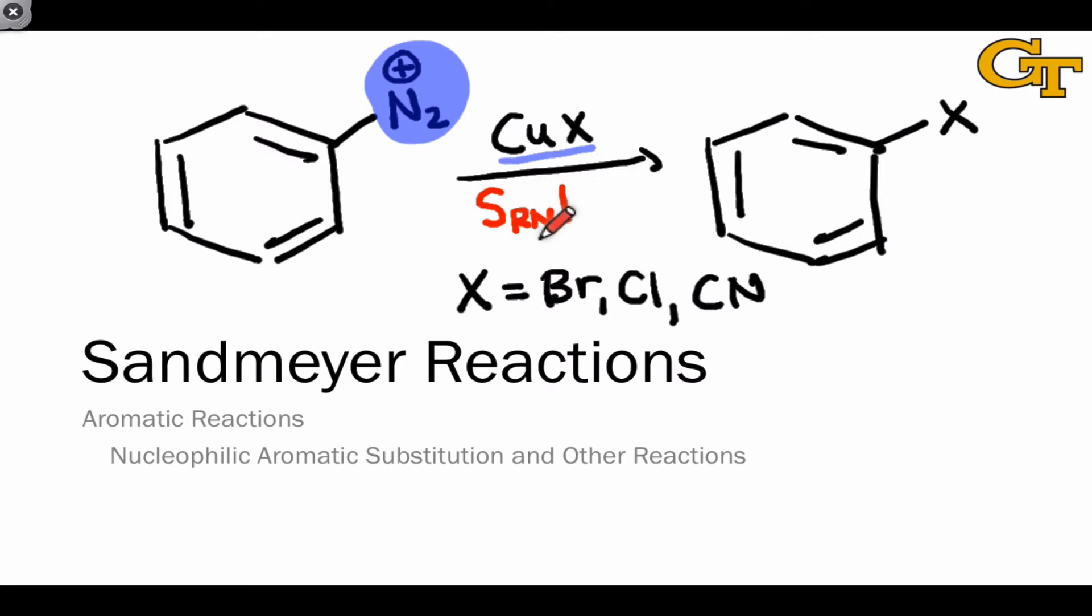Since a nucleophile is substituting, but by a radical mechanism. As in the case of SN1 and SN2 that we've encountered previously, the 1 indicates that the rate-determining step here is unimolecular, involving a single molecule.